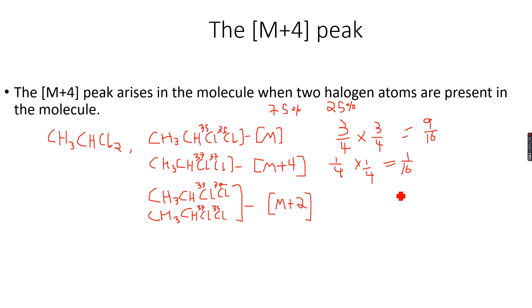And then in this case we have 3/4 times 1/4, because there is 1 Cl-35 and 1 Cl-37, so we have 75% multiplied by 25%. And then we have to multiply it by 2 because there are 2 possibilities for this molecule.